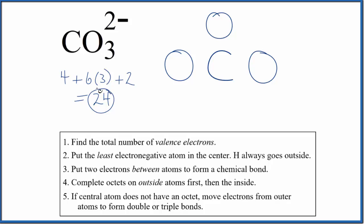We have a total of 24 valence electrons for the CO3 2- Lewis structure. We're going to put electrons between atoms, and that's going to form the chemical bond. So we'll form bonds between the carbon and the oxygen atoms.